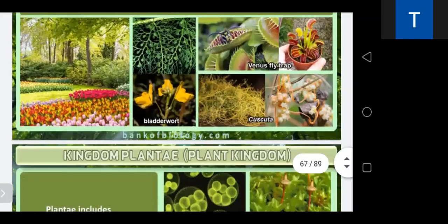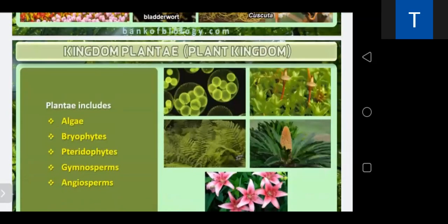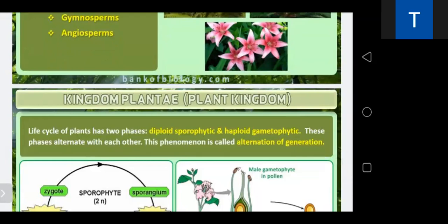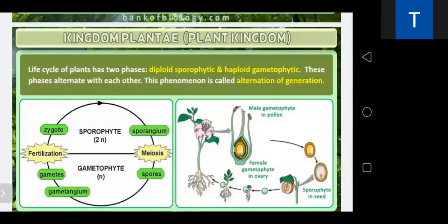This kingdom includes the following classes: Algae, Bryophytes, Pteridophytes, Gymnosperms, and Angiosperms. The members have two distinct phases — the diploid sporophytic phase and the haploid gametophytic phase — and this is called alternation of generation. In sexual reproduction, gametes fuse to form a zygote, and the body becomes sporophytic. In algae and bryophytes, the main plant body is haploid.